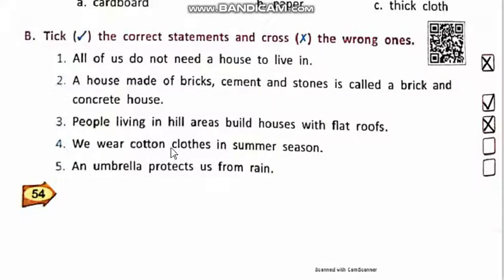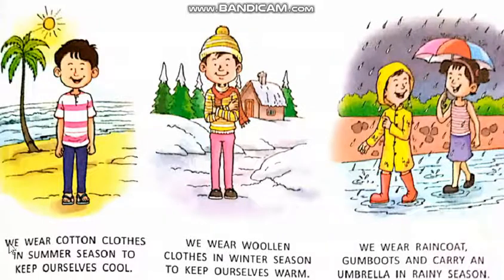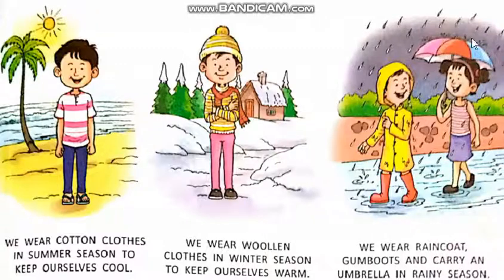Number 4: We wear cotton clothes in summer season. This statement is correct, so we write tick. Number 5: An umbrella protects us from rain. This statement is also correct, so we write tick. We wear cotton clothes in summer season to keep ourselves cool, and as you can see in this picture, an umbrella protects from rain.